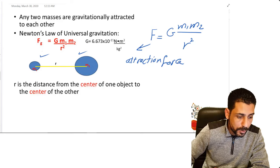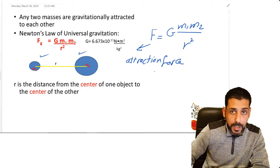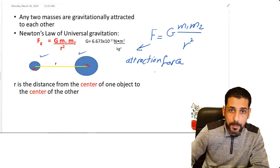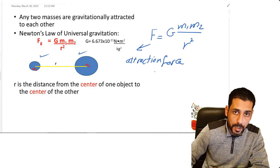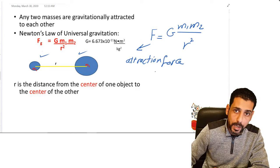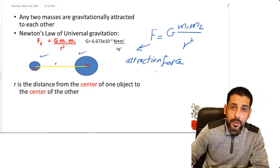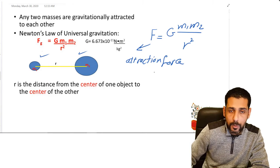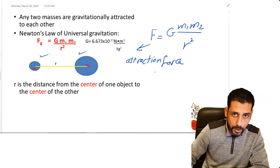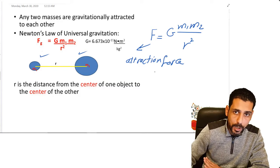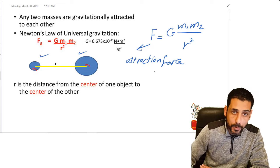This attraction force is different from electric force and magnetic force. With electric and magnetic force, the force between objects can be either attraction or repulsion. For example, with two poles of a magnet: north and north repel each other, south and south repel each other, north and south attract each other. But here with gravity we have only attraction force.